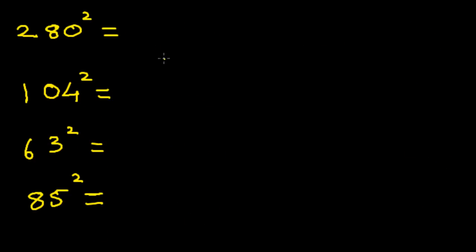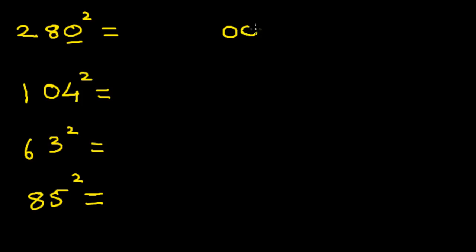A few more examples. The first one is 280 squared. When you find the square of a number that ends with zero, all you have to do is count the number of zeros at the end — in this case it's just 1 — and write twice as many zeros. So if it's a single zero, you'll write two zeros; if it is 2, you'll write 4, and so on.